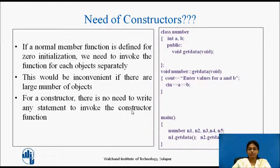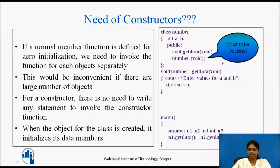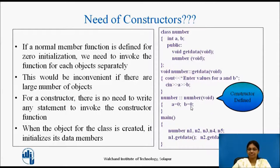With a constructor, there is no need to write any statement to invoke it explicitly. When the object is created, the constructor initializes its data members automatically — there is no need to use the object and dot operator to call it separately. Here, the constructor 'number' initializes A and B to 0. If five objects are created, the constructor is invoked five times and initializes A and B to 0 for each object separately.